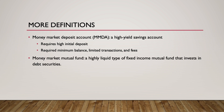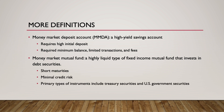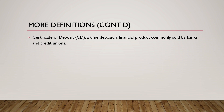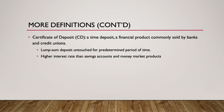Money market mutual funds are a highly liquid type of fixed income mutual fund that invest in debt securities characterized by short maturities and minimal credit risk. Primary types of instruments held in mutual funds include Treasury securities and U.S. government securities. A certificate of deposit, or CD, is a time deposit, a financial product commonly sold by banks and credit unions. The depositor agrees to leave a lump-sum deposit untouched for a predetermined amount of time. However, the deposit earns a higher interest rate compared to savings accounts and money market products, and there are penalties for early withdrawal.